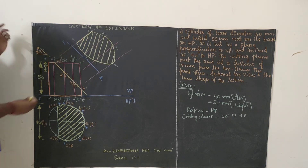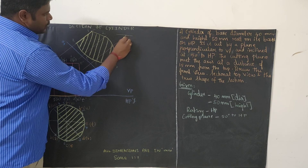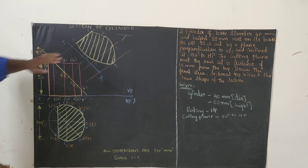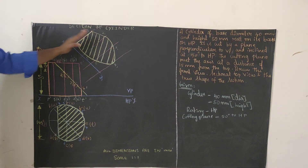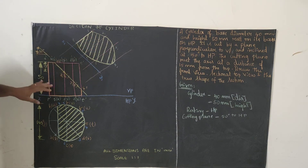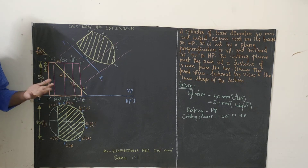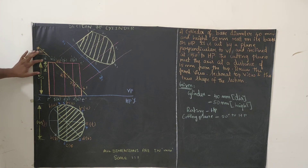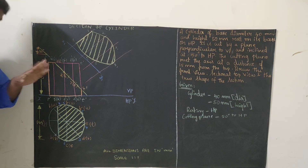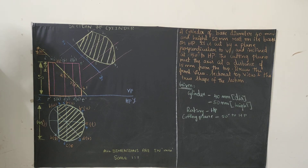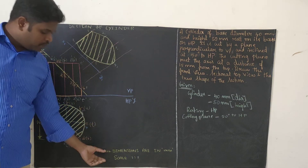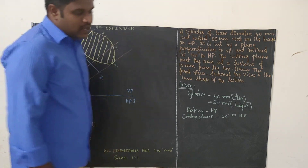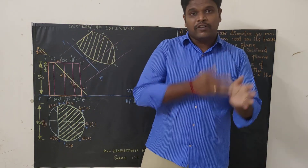Do hatching on the true shape at 45 degrees with equal spacing. Drawing conventions: use HV pencil for the sectional top view, hatching, numbering, naming, and alphabets. Extension lines should be 2H pencil, dimension lines should be H pencil. The title 'Section of Cylinder' should be 10 mm text height; scale note '1:1' should be 5 mm text height.